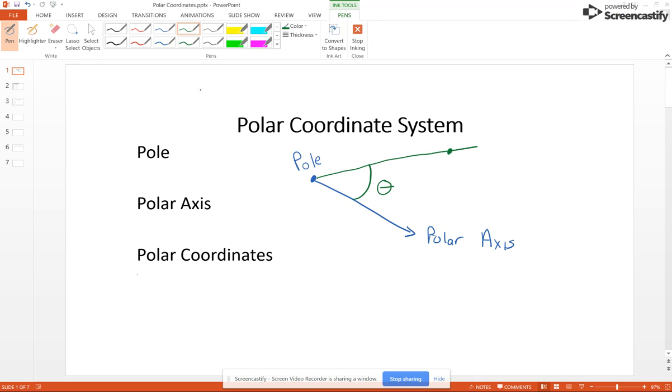Your polar coordinates are going to be r, which is the distance between the pole and the point, so that piece of your terminal side, and your theta. So the polar coordinates are r comma theta.